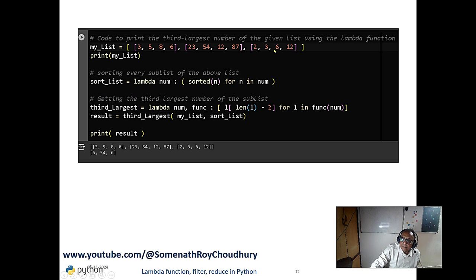And this is another example. Here very interesting examples. We will pass on the three lists. And we want to get the third highest number from this. It's very important.